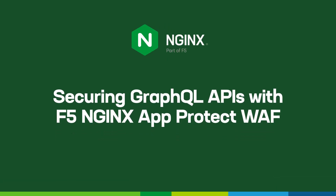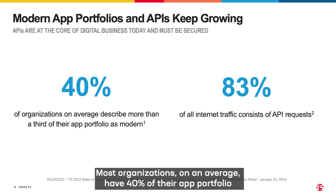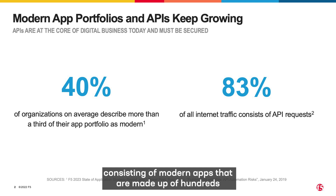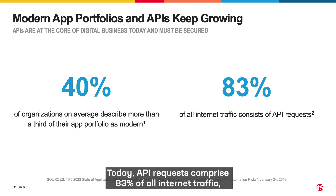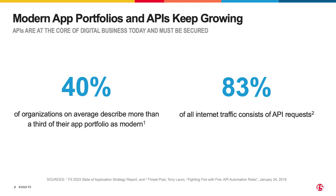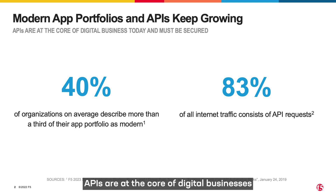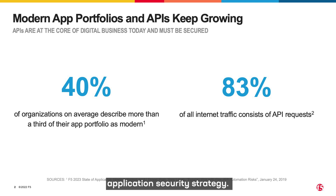Welcome to the demo of securing GraphQL APIs with F5 NGINX AppProtect WAF. Most organizations, on an average, have 40% of their app portfolio consisting of modern apps made up of hundreds of microservices that communicate with APIs. Today, API requests comprise 83% of all internet traffic, making them one of the fastest growing targets for attackers to exploit. APIs are at the core of digital businesses and must be protected as part of your overall application security strategy.